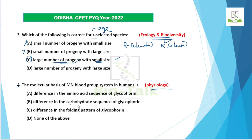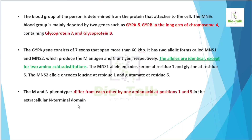The ABO blood group system is determined by proteins on the cell surface. A person's blood group is determined by the protein that attaches to the red blood cell surface. The blood group protein on the red blood cell surface defines the group antigen.